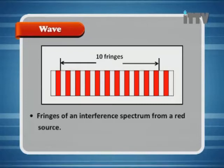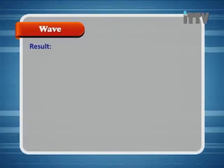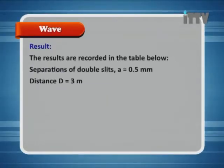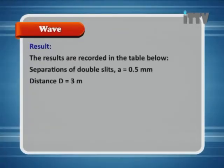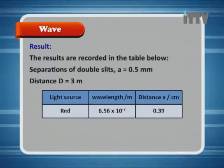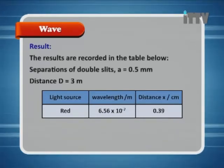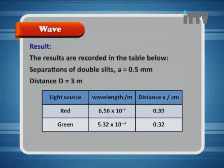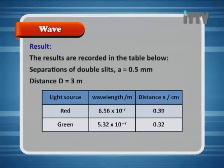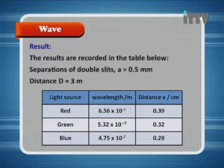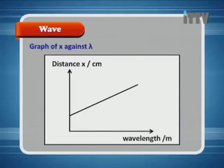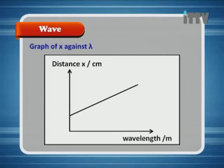Fringes of an interference spectrum for a red source. Results: The separation of double slits A is 0.5 mm and D was 3 meters. For a red source of light, the wavelength is 6.56 times 10 to the negative 7 meters and X had a value of 0.39 centimeters. With green light, where the wavelength is shorter, X was shorter. With blue light, where the wavelength is even shorter, X was even smaller. If we plotted a graph of X against lambda, we'd get a straight line.